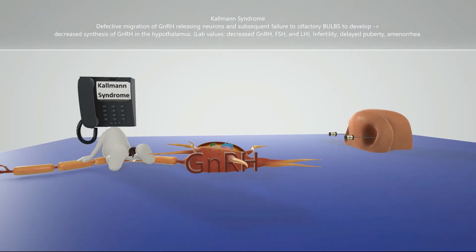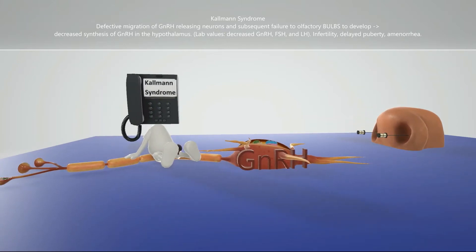Kallmann Syndrome is caused by a defective migration of neurons, represented by the Call Man over here, who's trying to migrate on this nerve cell. But it's not working out. There's defective migration, and this leads to a subsequent failure of the olfactory bulbs to develop,